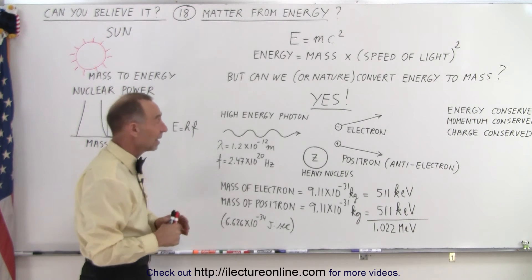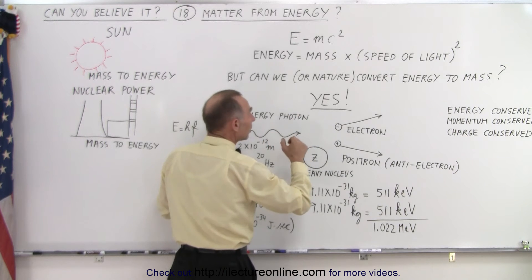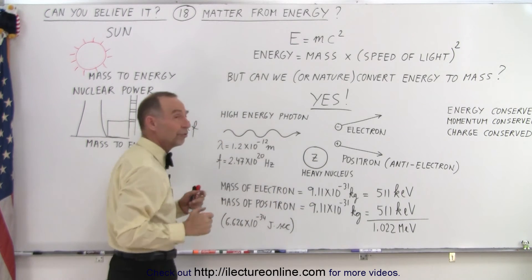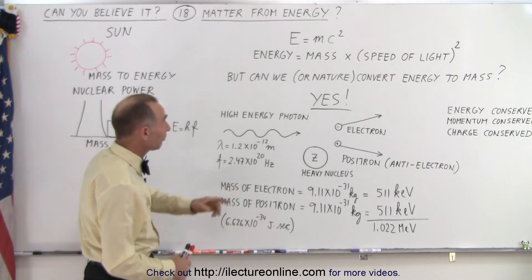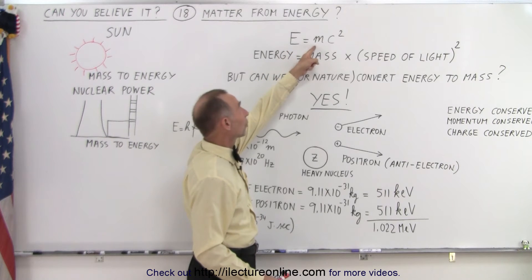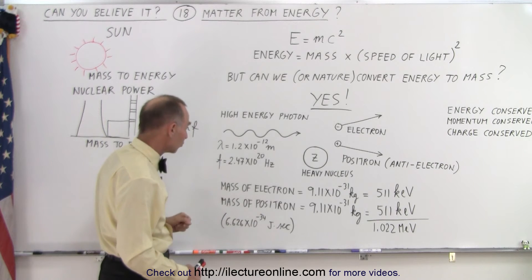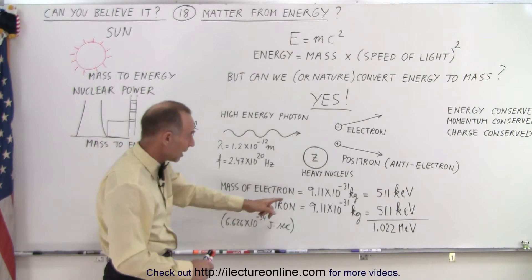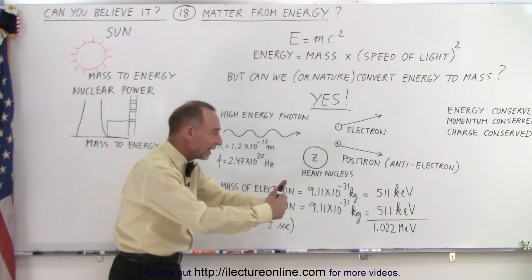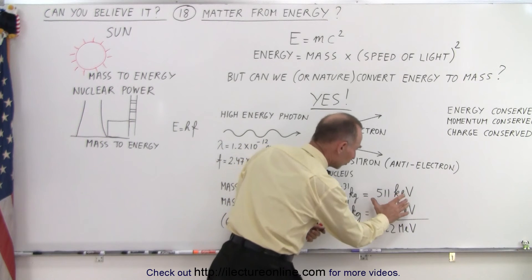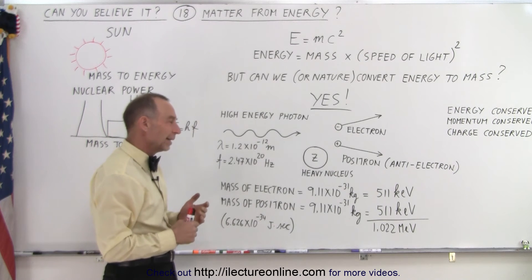Now, obviously, if you're going to produce particles from energy, you need to have enough energy. So how much energy does this photon need to have in order to produce these two particles? Well, if we use the equation E equals MC squared, so M is equal to the energy divided by C squared, and realizing that the mass of an electron and the mass of a positron are exactly the same, 9.11 times 10 to the minus 31 kilograms, if we convert that to energy, that is an energy equivalent of 511,000 electron volts.